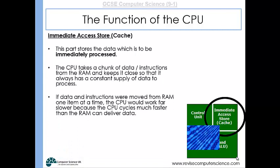So one of the reasons why several instructions are taken from the RAM to the CPU and stored very close by in the cache is really just so that the CPU has always got instructions that it can process. It works exceptionally fast – we're talking billions and billions of fetch-decode-execute cycles per second.